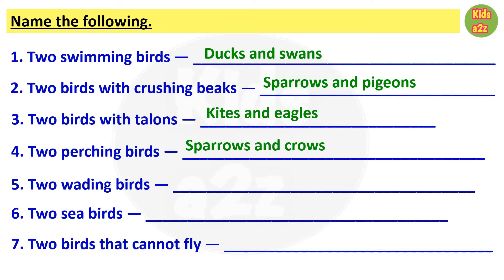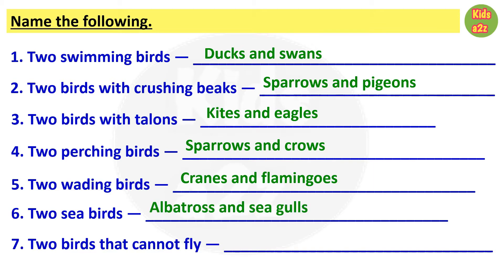Number 5, 2 wading birds — answer is cranes and flamingos. Number 6, 2 sea birds — answer is albatross and seagulls. Number 7, 2 birds that cannot fly — answer is penguins and ostrich.